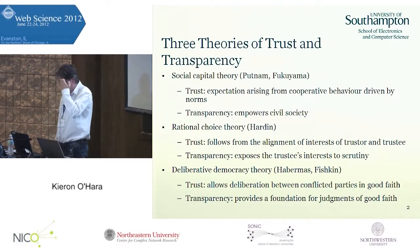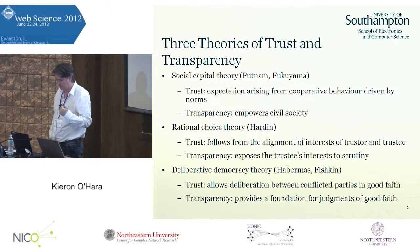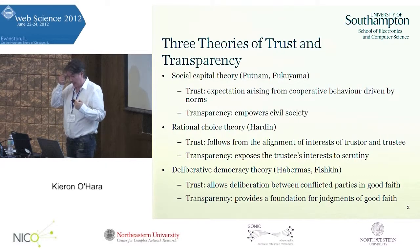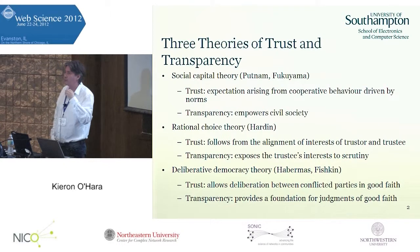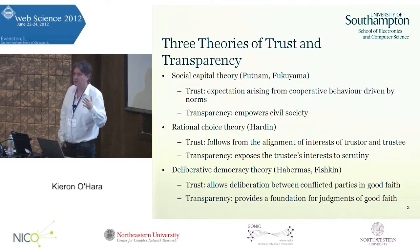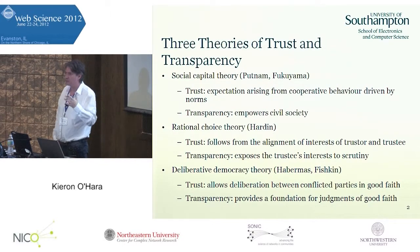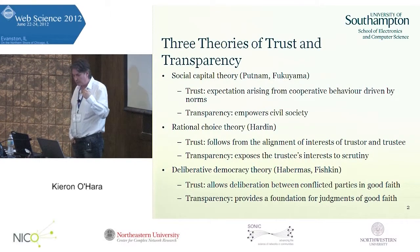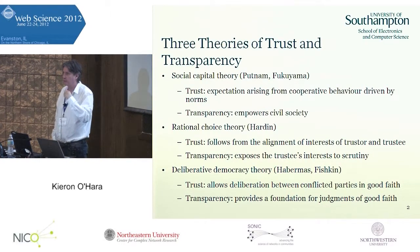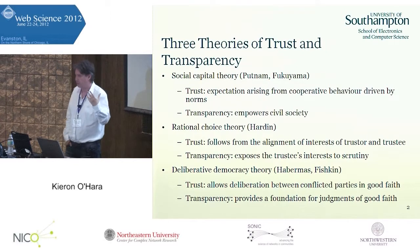The second theory is rational choice theory, where the work of Russell Hardin is very important. Trust follows from aligning the interests of the truster and the trustee — the trustee works in the truster's interests for reasons grounded in the truster's interests. The role of transparency in that scenario is that if the facts are transparent, I can see what the trustee's interests are. This is why politicians have to publish information about who's donating to their campaigns, so we can see where their interests lie.